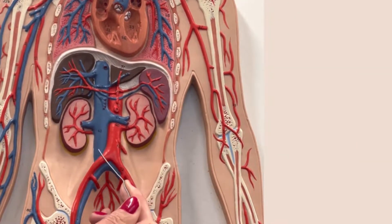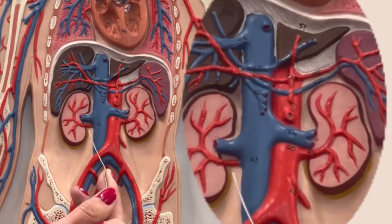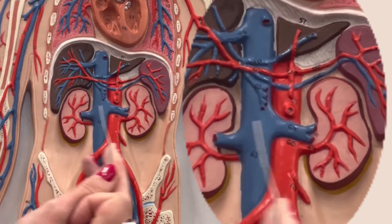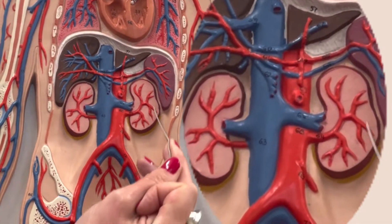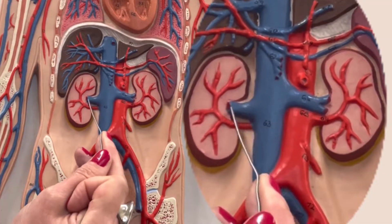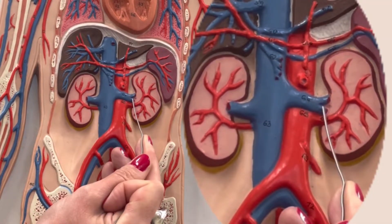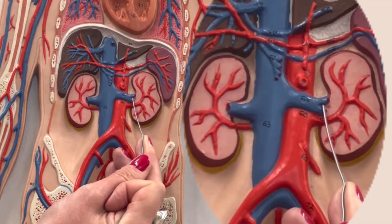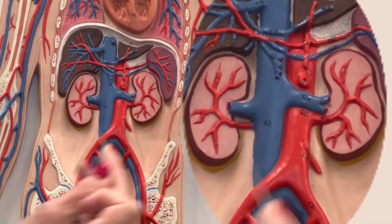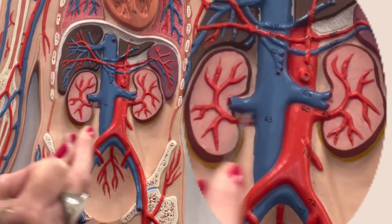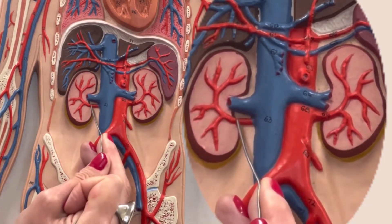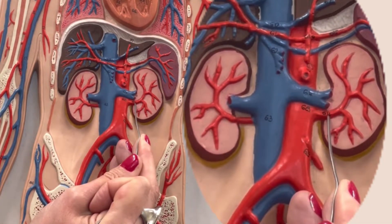We see here the inferior vena cava, and we have a vein going towards each of the kidneys — these are specifically the renal veins. And this artery that you see right next to it would be named the renal arteries.